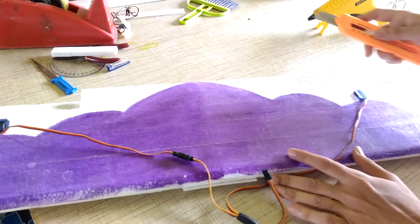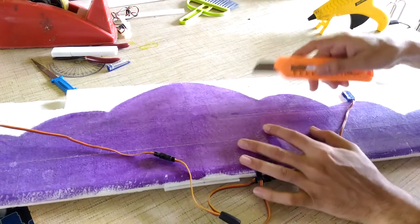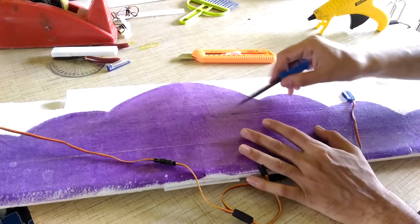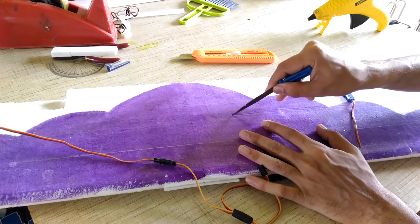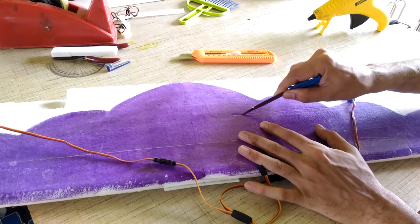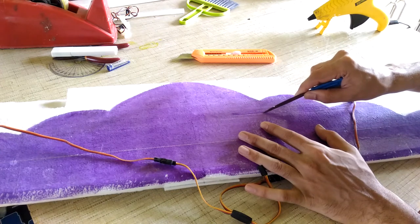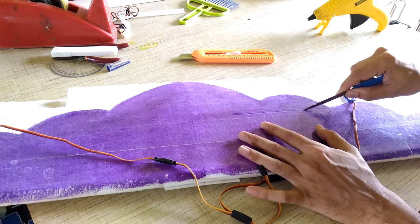So this is the bottom side of the wing and I am using this Y splitter cable. So basically it is going to reverse the two servos on single channel so one aileron goes up the other goes down, so that is very convenient.